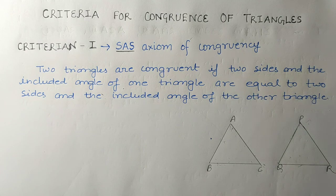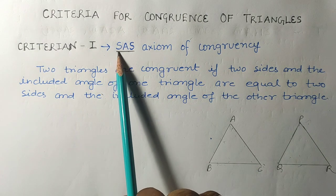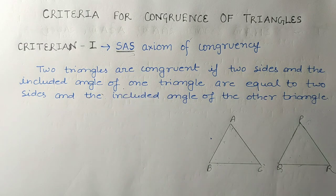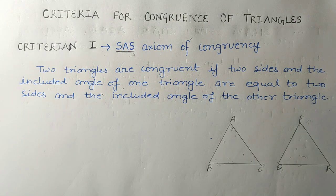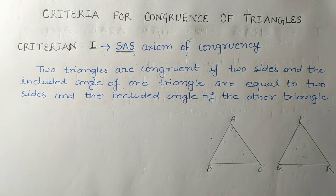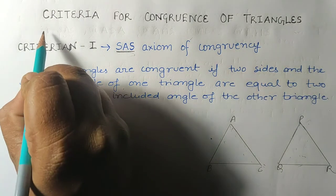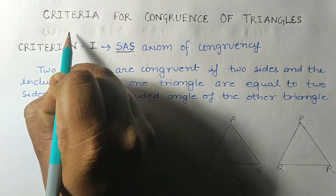Instead, if we show only three components by a given rule, we can still say that two triangles are congruent. This is the shortcut — the criteria — to prove congruence. In your syllabus, there are five criteria: Side-Angle-Side (SAS), Angle-Side-Angle (ASA), Angle-Angle-Side (AAS), Side-Side-Side (SSS), and Right Angle-Hypotenuse-Side (RHS).